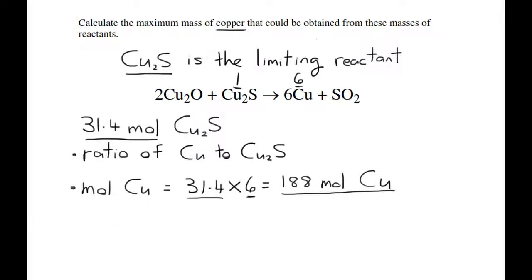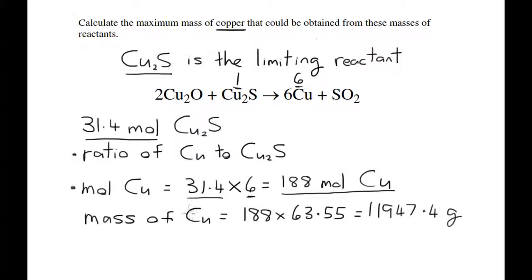The next step is to find the mass, because the question is asking for the maximum mass of Cu. You multiply the number of moles by the molar mass of Cu, which is 63.55 g/mol. That gives you 11,947.4 grams.